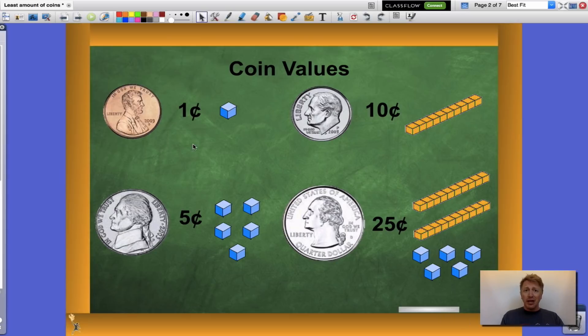Let's take a look at coin values. Remember a penny is worth one cent, a nickel is worth five cents, a dime is worth ten cents, and our quarter is worth twenty-five cents.